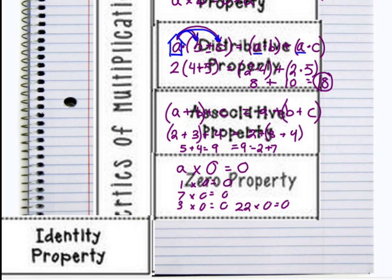And lastly, the identity property. That's that property we talked about in class again with the mirror, right? So if we have A and we add 0, it's still going to equal A. If we have A and we multiply by 1, it's still going to be equal to A.